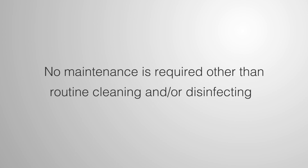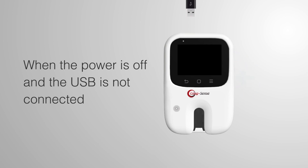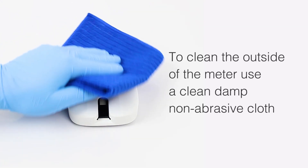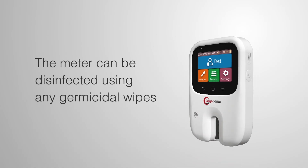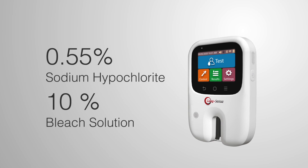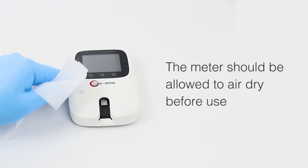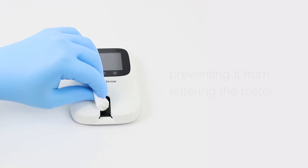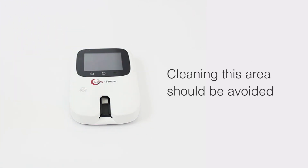No maintenance is required other than routine cleaning and/or disinfecting. When the power is off and the USB cable is not connected, the meter housing can be cleaned and disinfected. To clean the outside of the meter, use a clean, damp, non-abrasive cloth. The meter can be disinfected using germicidal wipes with 0.55% sodium hypochlorite or 10% bleach solution with a 1-minute contact time. The meter should be allowed to air dry before use. The test strip is designed to contain the patient's sample, preventing it from entering the meter. Do not clean or disinfect inside the meter where the test strip is inserted.